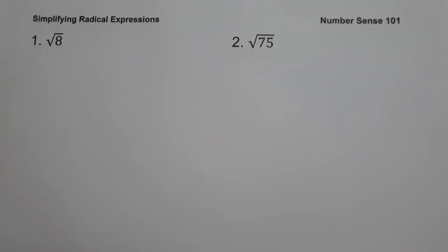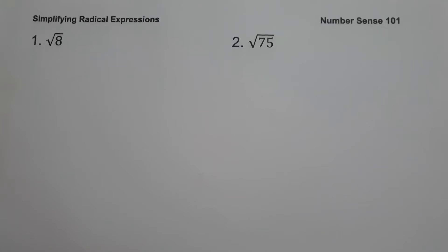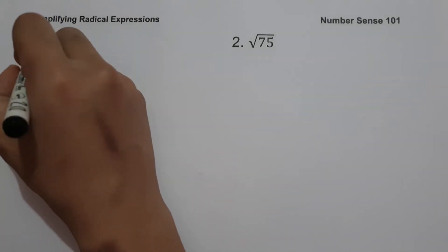For today's video we are going to talk about how to simplify radical expressions and we are going to explain everything in detail. For example number one, we have square root of 8. Since our index is 2 and our radicand is not a perfect square, to simplify the square root of 8 we are going to find two factors where one of the factors is a perfect square. The factors of 8 are...